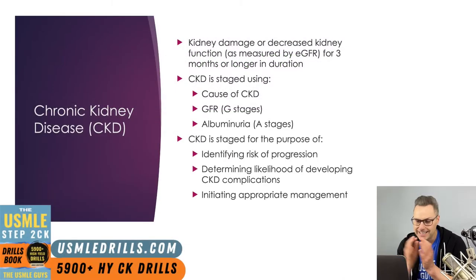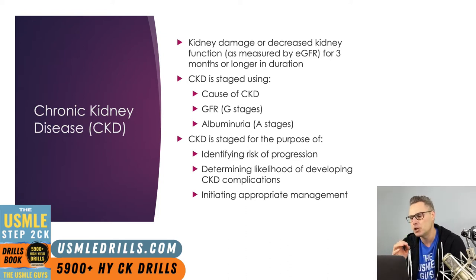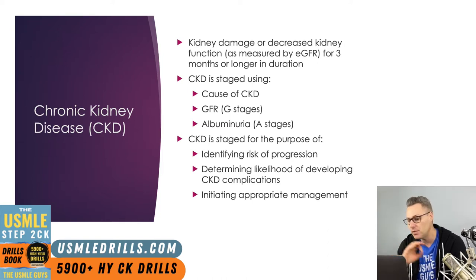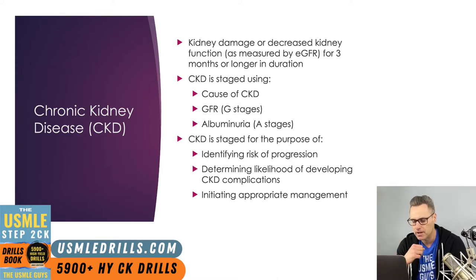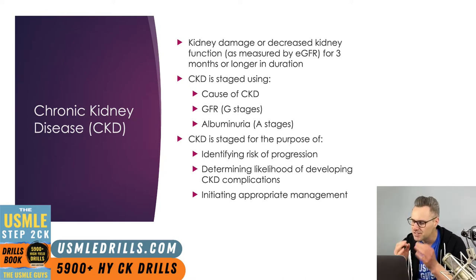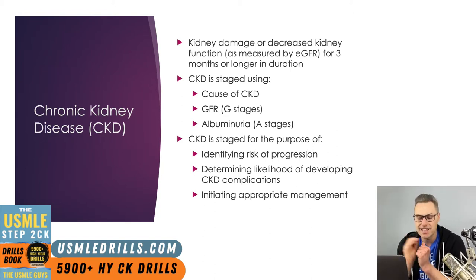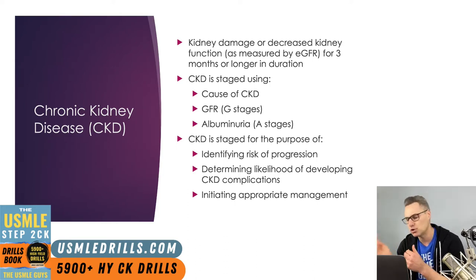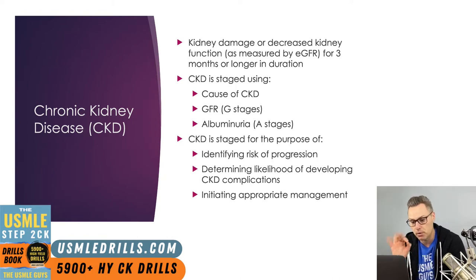Chronic kidney disease is a diagnosis we give a patient once their kidney has been damaged or the kidney function has decreased for at least three months. Anything less than three months is known as AKI, acute kidney injury. Sometimes clinically, you may also hear physicians mention subacute kidney injury, referring to kidney injury developing over more than 48 hours but less than three months. For the STEP2CK, acute versus chronic is the main distinction, and that begins at the three-month mark.